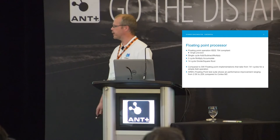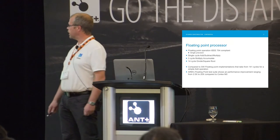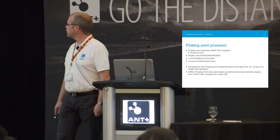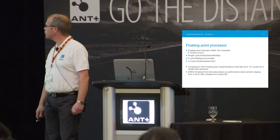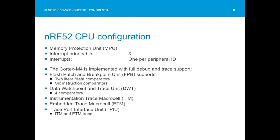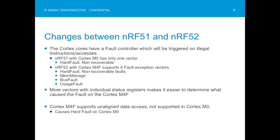It's more or less the same number as Thomas presented earlier today — 2.5 to 20x improvement compared to the M0 on floating point. Looking at changes directly compared to the 51: on the 51 you have one hard fault and you don't know exactly what causes it. On the 52 there are four different fault types — hard fault, non-maskable, memory management fault, bus fault, and usage fault — and you can handle them individually, giving you much more knowledge at that level.